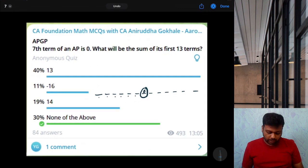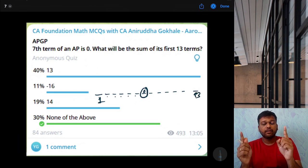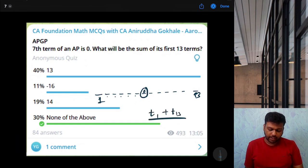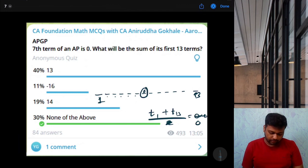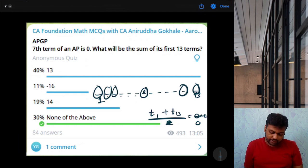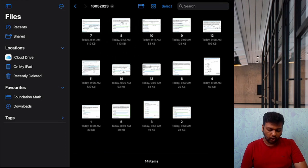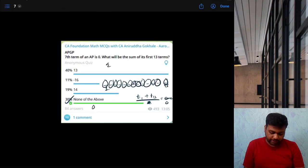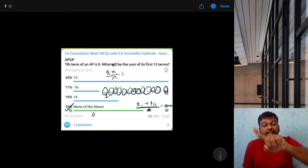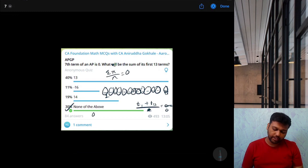That means, first term plus 13th term divided by 2 is going to be 0. That means, first term plus 13th term is going to be 0. So sum of these two is 0. Similarly, sum of these two is also 0 because again, seventh is the middle term. Sum of these two is 0. Sum of these two is 0. Sum of these two is also 0. So that means, sum of everything is 0, none of the above is the correct answer. Or, you could have just done summation x divided by n is arithmetic mean, that is the middle term, 0. So that means, summation x is also 0.